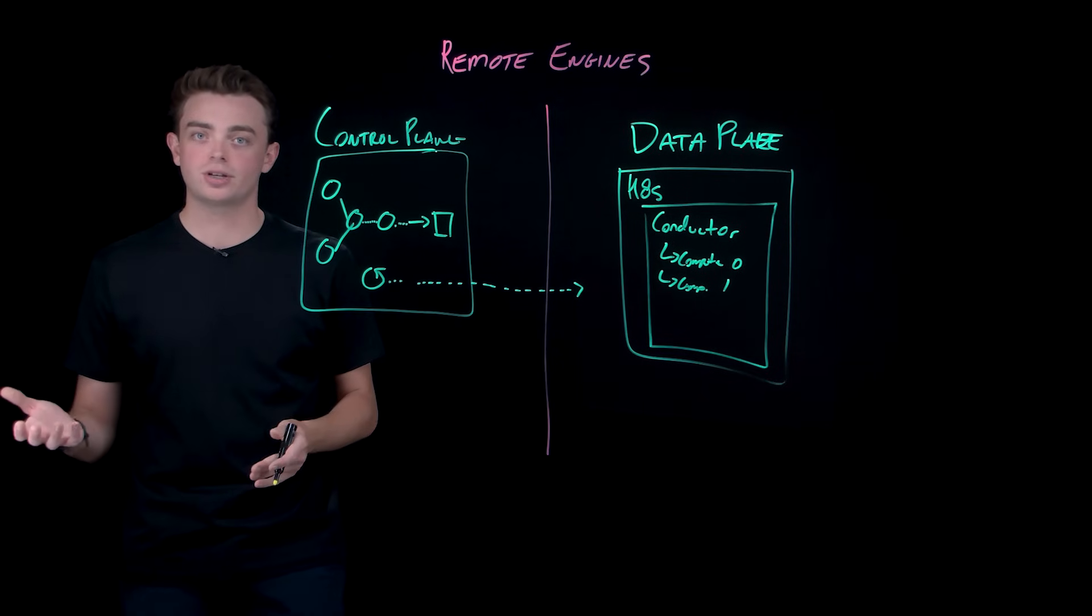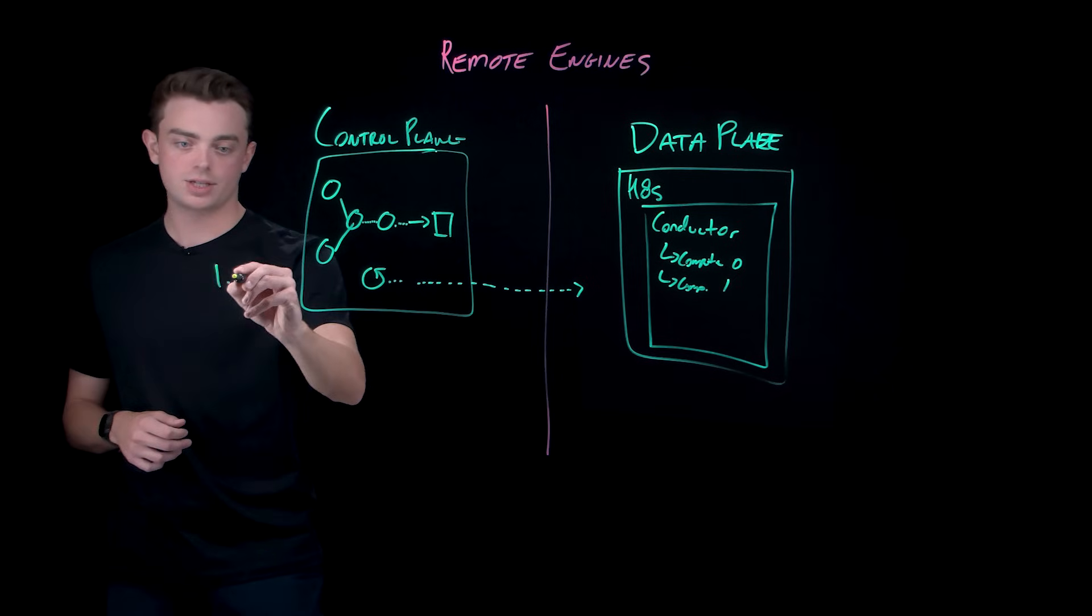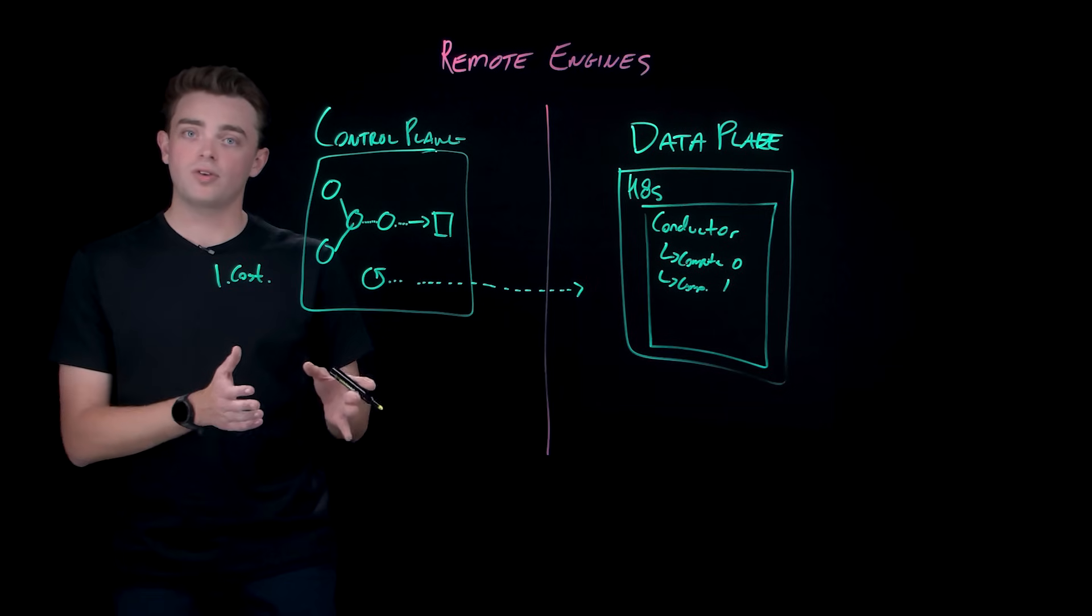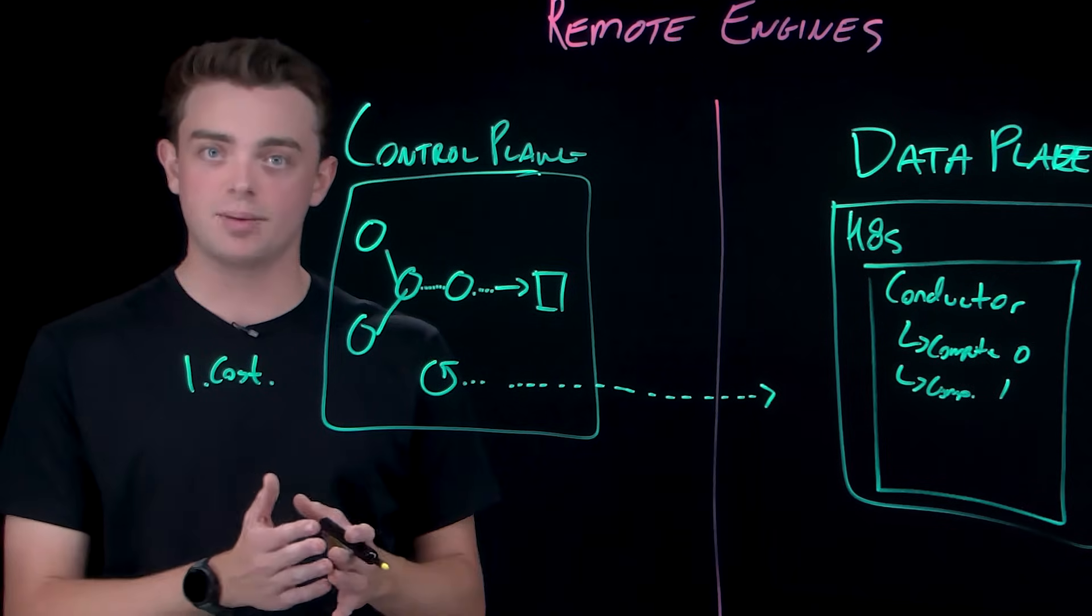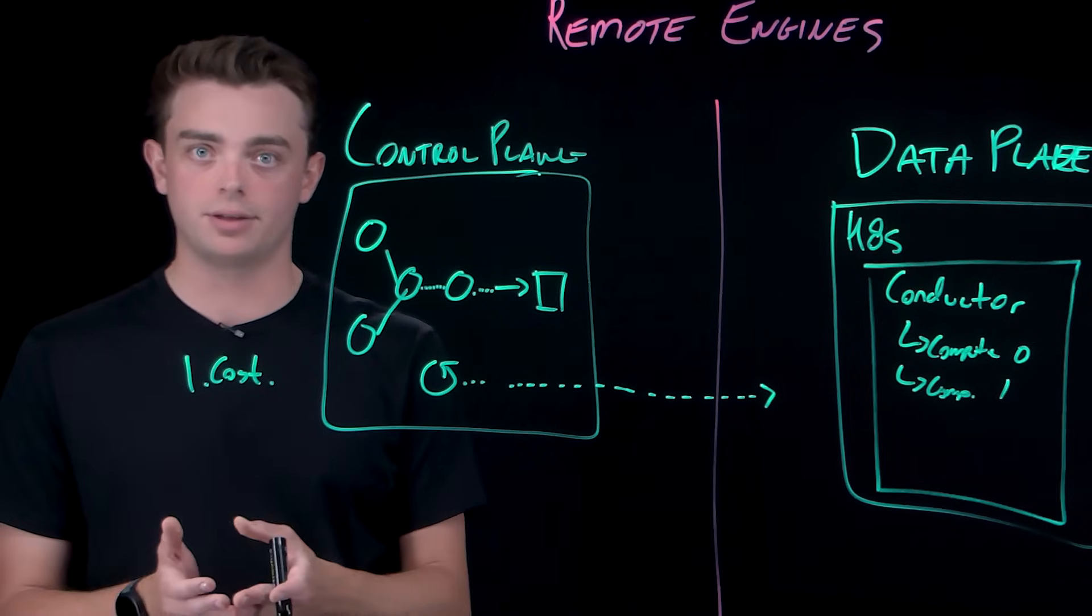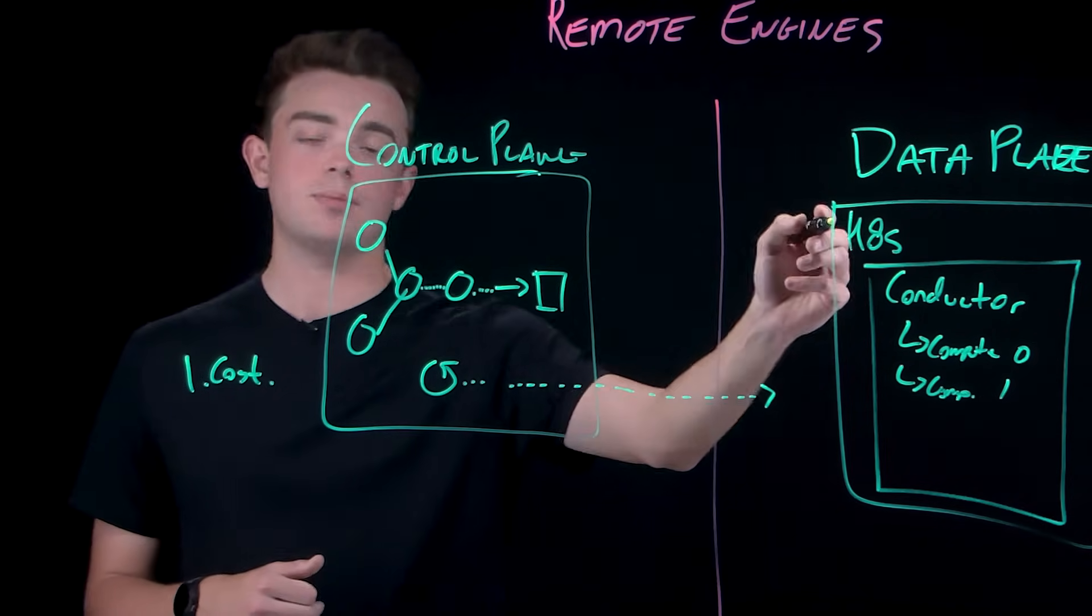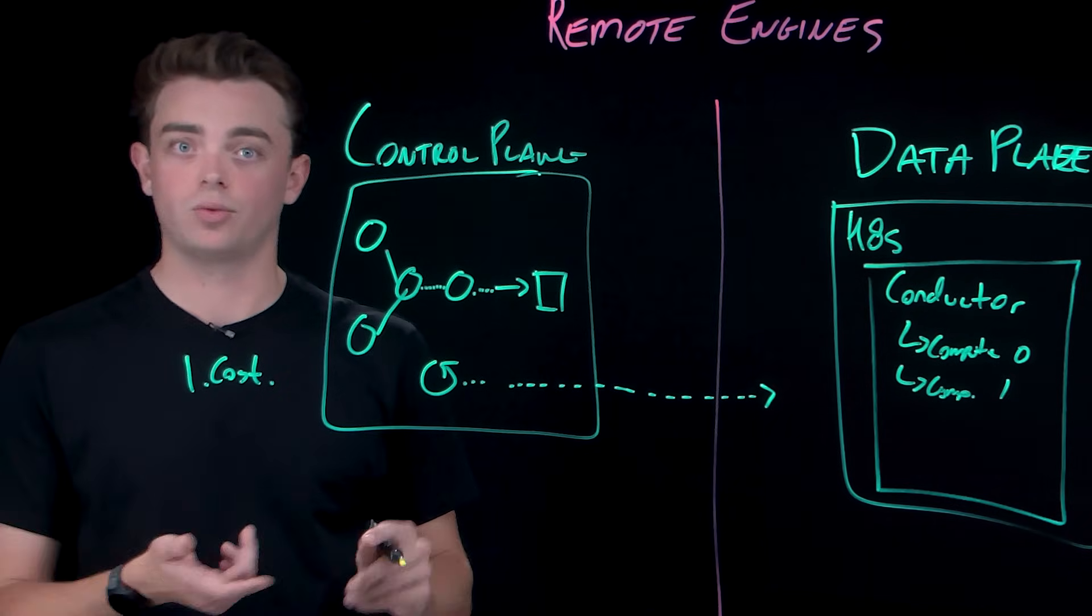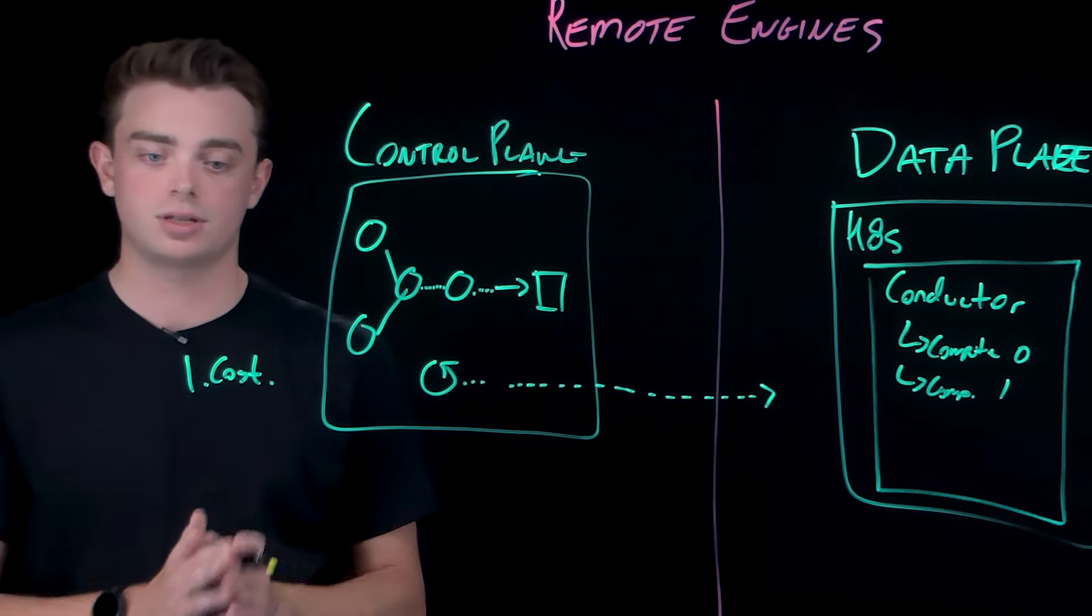So let's break down why this architecture is becoming essential for modern data operations. The first is cost efficiency. Cloud providers charge egress fees when data leaves their environment. This adds up when you're moving millions of rows daily. Remote engines eliminate this by processing the data in the same cloud as where it lives, with use cases including running data quality rules where the data resides, leading to substantial cost savings.